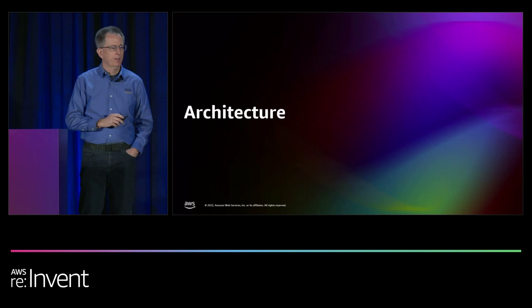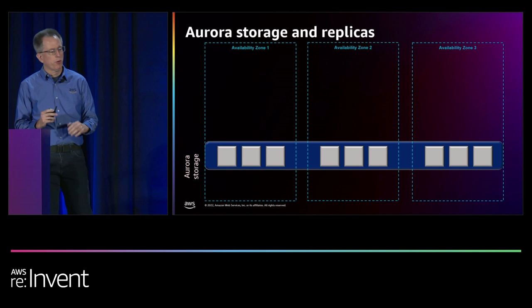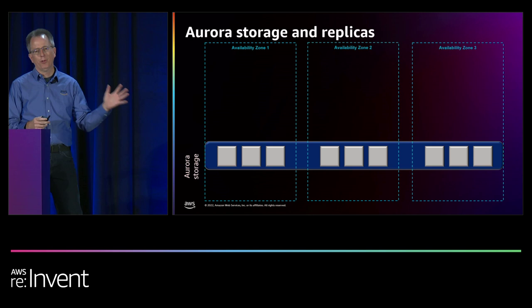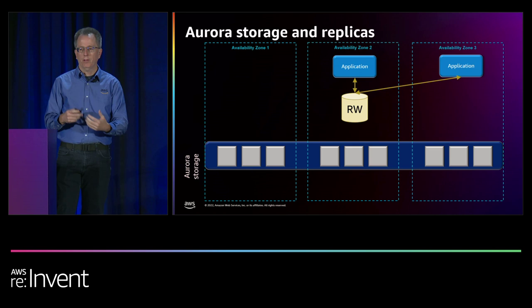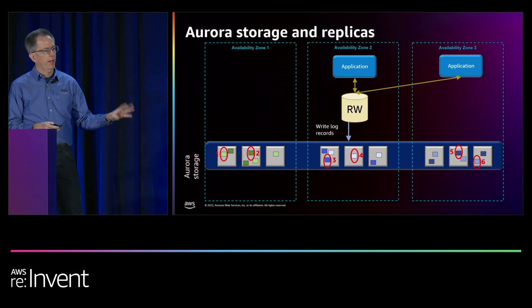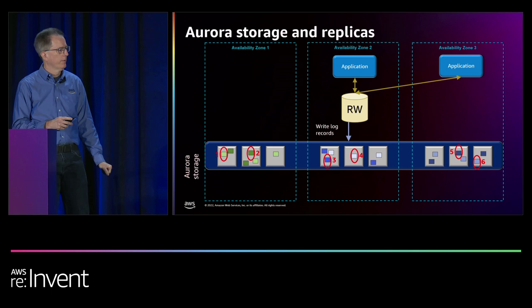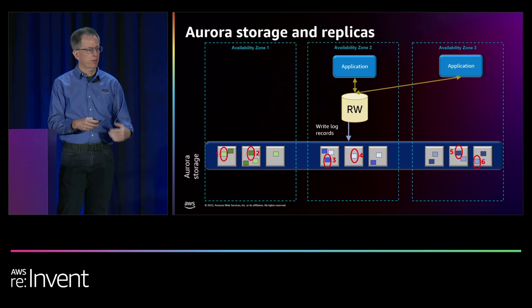When we talk about architecture for Aurora, one of the first things to understand is it's regional — it runs across a region. The storage is across three availability zones. Here I'm depicting in blue a virtual storage layer you get when you provision a cluster, and the gray boxes are the storage nodes. We divide this storage up into 10-gig segments, and those segments are mirrored across six copies. We need four of six writes to complete before we give an acknowledgment back to the client that we're durable, so we can continue writing even if we have an AZ outage.